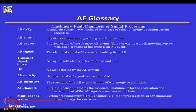Certain terms used in acoustic emission: acoustic emission is a transient elastic wave produced by the release of elastic energy during mechanical stress. The event is the burst from the source; the signal is what you get from the AE transducer — signals could be transient or a continuous burst. AE activity is the occurrence of an AE signal, AE intensity is the strength, and AE channel is the number of measurement sensors.